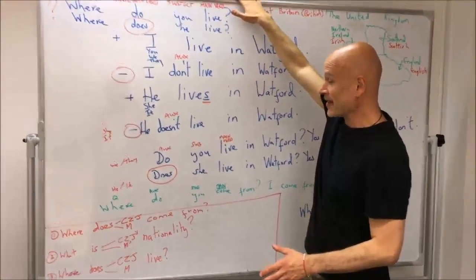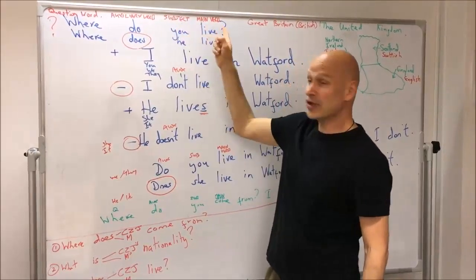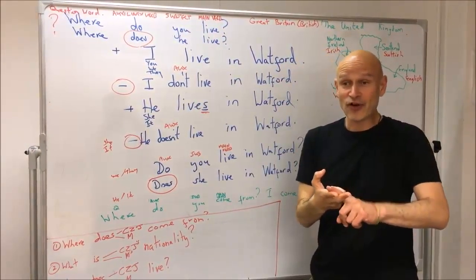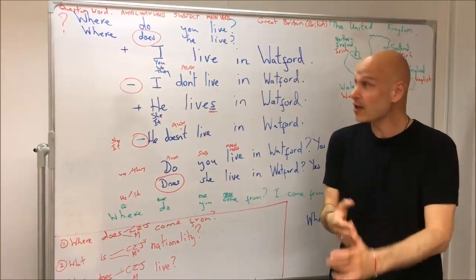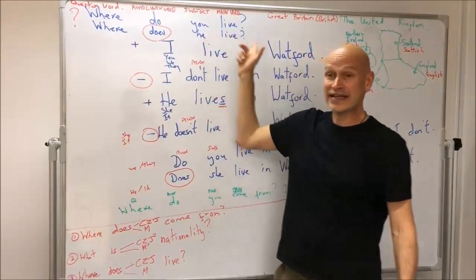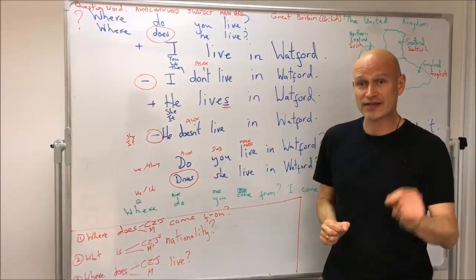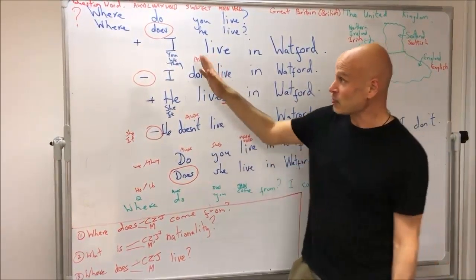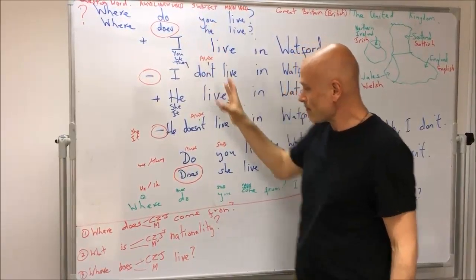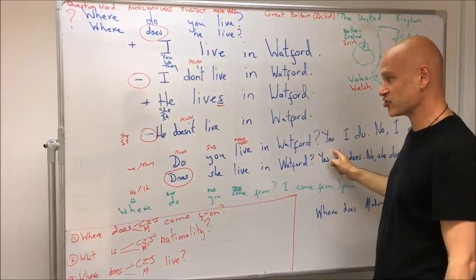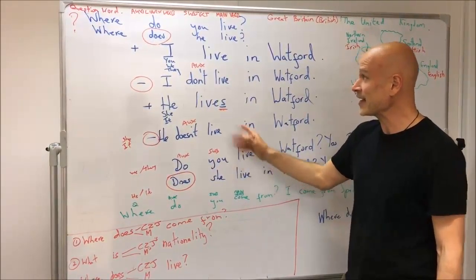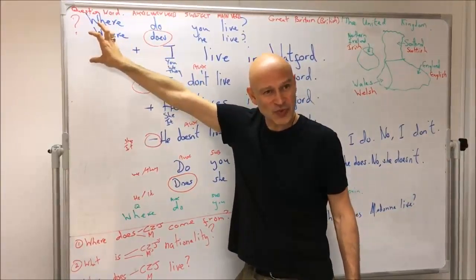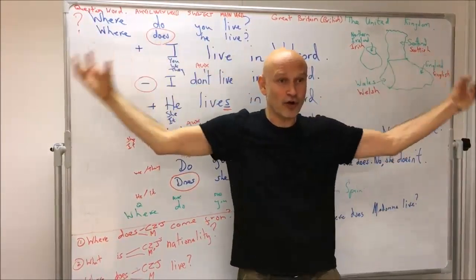Then we took a question word and made questions. Where do you live? Where do I live? Where do they live? Where do we live? — for I, you, we, they. And where does he live? Where does she live? Where does it live? This is how we showed the difference between yes/no questions — auxiliary, subject, main verb — and when we add a question word at the beginning to make a long answer.